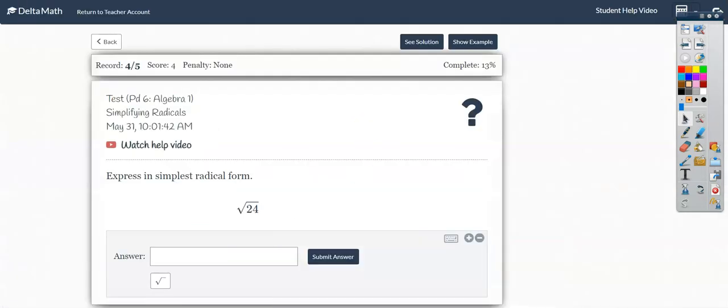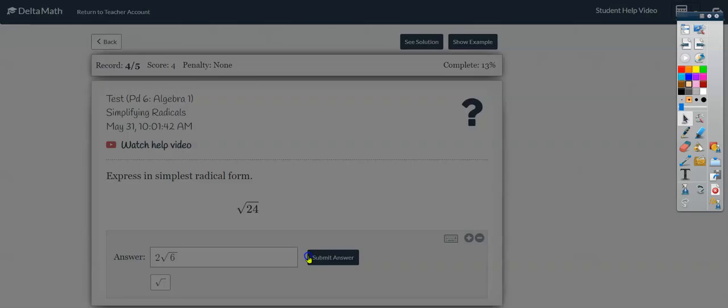Now we have our two factors. The square root of 24 can be rewritten as the square root of 4 times the square root of 6. The square root of 4 is perfect. The square root of 6 is not. So 2 square root of 6 is my final answer. Use the square root button down here and then you're all set.